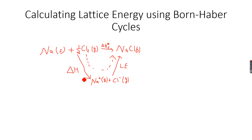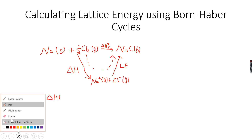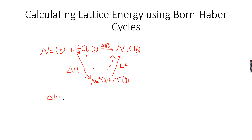Hess's law — named after the scientist Hess — tells us that the total enthalpy change will be the same regardless of the route taken by the reaction. We can therefore say that ΔH°f will be equal to ΔH plus LE (lattice energy).